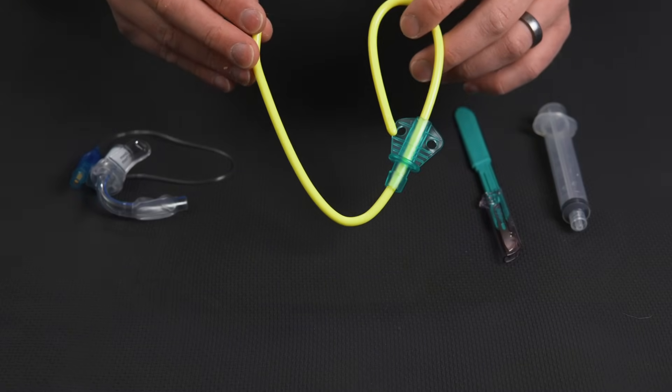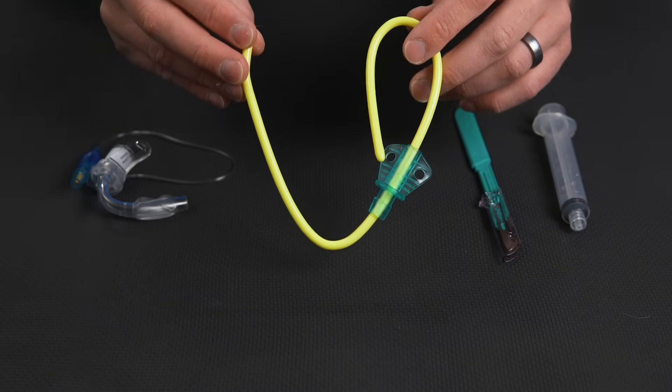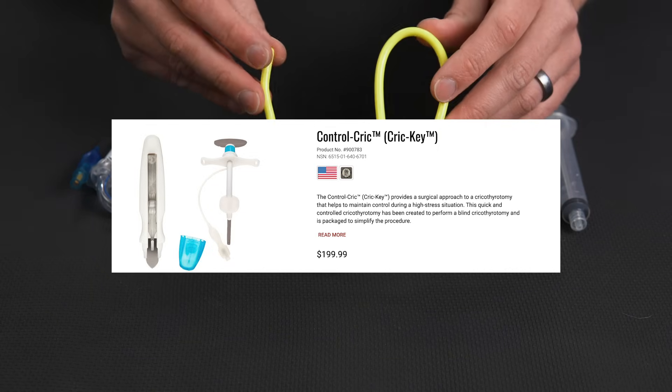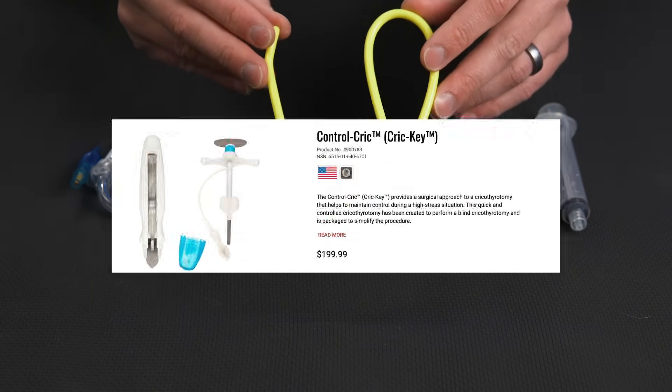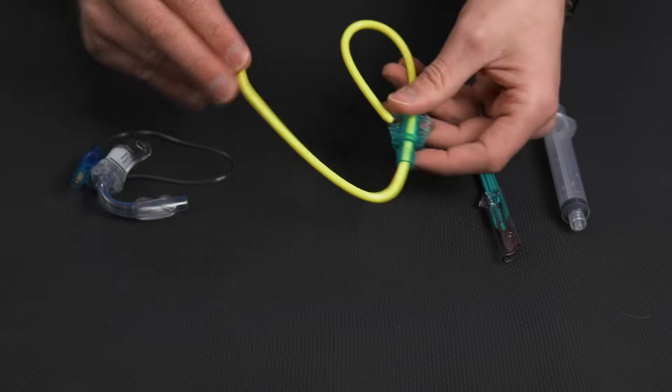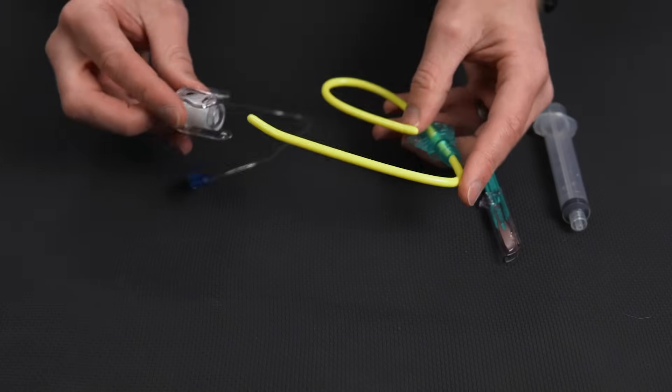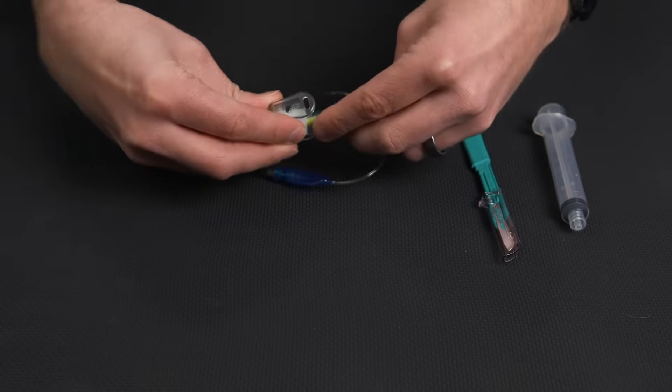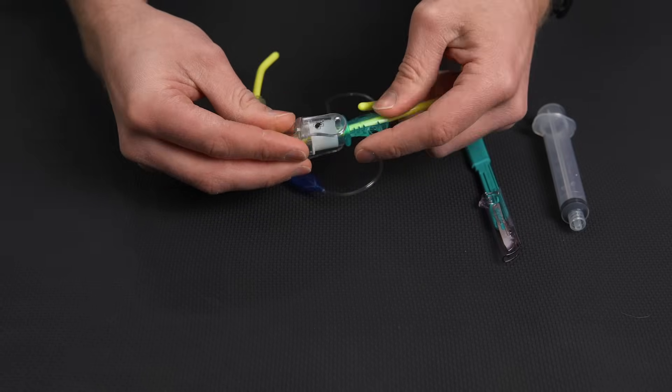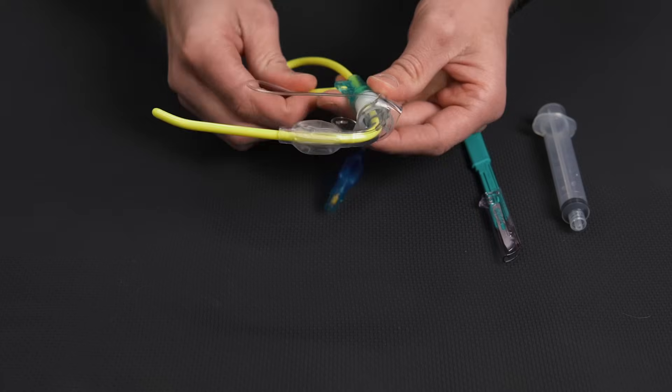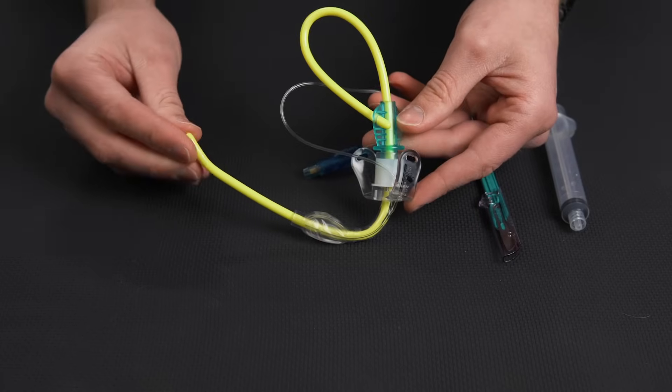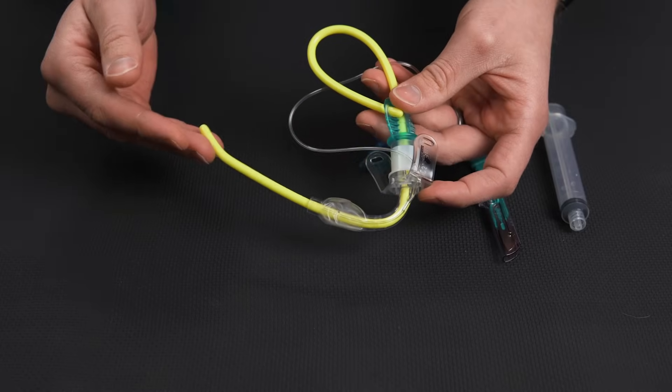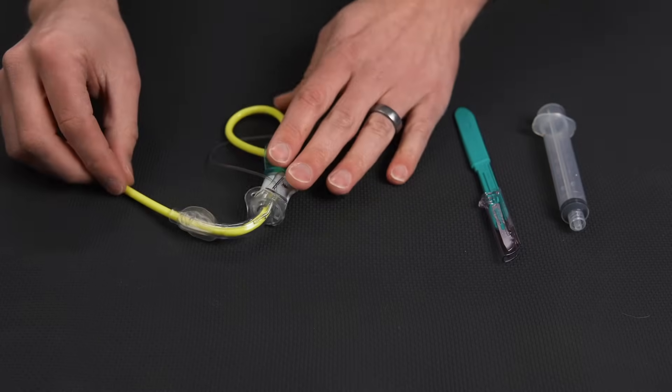There is another device out there called the cric key, which is actually what is recommended by the committee for tactical combat casualty care. I will tell you that device is very expensive coming in about $200. You can get this combo here for about $27 without a pro deal, and then you can get it actually for $11 if you're a professional and have a professional account with North American Rescue.